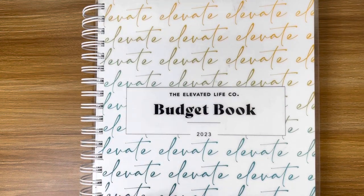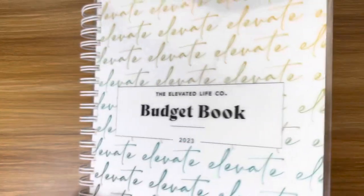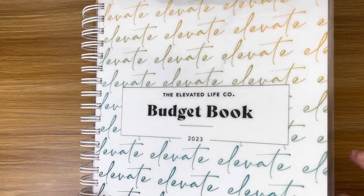Hey guys, it's Tracy. In today's video, I'm going to budget for paycheck number one for the month of June. I am using the Elevated Life Code Budget Book.